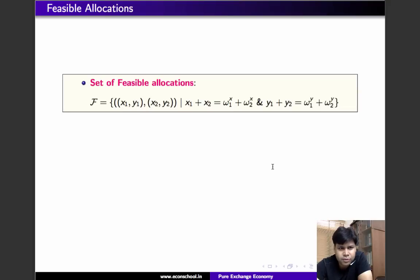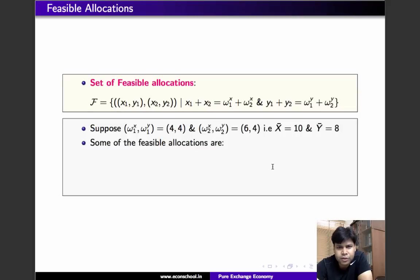So, what are the feasible allocations? The feasible allocations are, for example, allocation A in which individual 1 consumes 10 units of x and individual 2 consumes 8 units of y. So, you can clearly see that 10 plus 0 is 10 and 0 plus 8 is 8, that is why it is feasible.